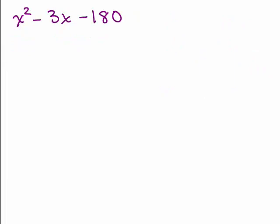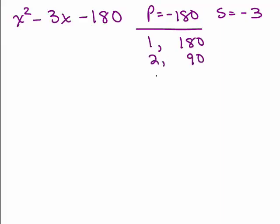All right, let's do one more. Yeah. This is kind of a pain because it's got a big number. Negative 180. You've got to write all the factors of negative 180. So let's do that. The product is going to have to be negative 180. Okay, you're just going to have to deal with that. So, 1 and 180, 2 goes into it, 90, 3, 60.